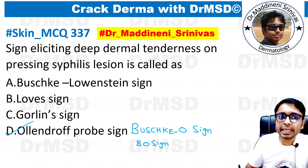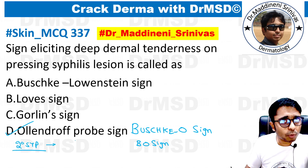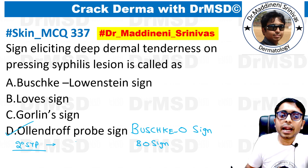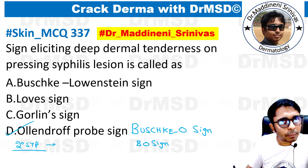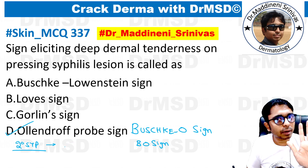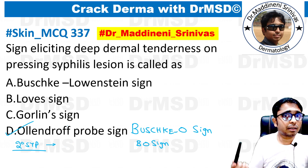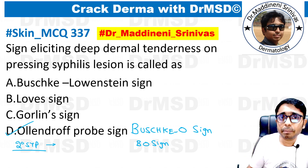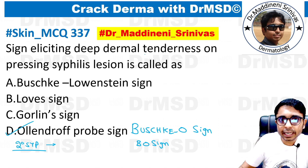Basically in secondary syphilis, patients are going to develop polymorphic lesions, out of which there can be papular lesions, macular lesions, maculopapular lesions, and also hyperpigmented lesions over the palms and soles. If we take an alpin and press these papular or palmar-plantar lesions with the blunt end, the patients are going to wince with pain, and that is called deep dermal tenderness.